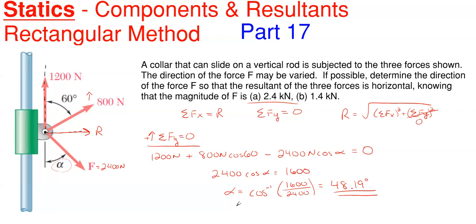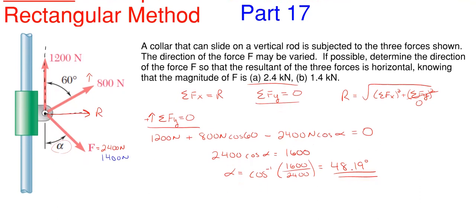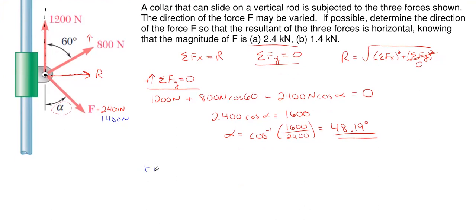All righty. So we're just going to repeat this process for part B. Same understanding once again, that the resultant is once again in the horizontal direction. And that we're going to have to sum forces in the y direction once again to be equal to zero. But instead of it being 2400 this time, it'll be 1400 newtons this time. So basically, we just rewrite this equation for our FY, just substitute in 1400 for the 2400. And we will find our angle once again. But keep in mind, what does the problem say? The problem says, if possible.